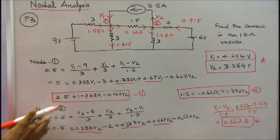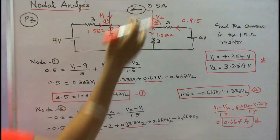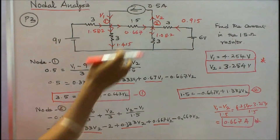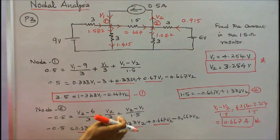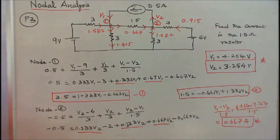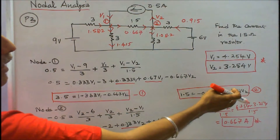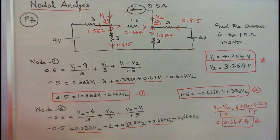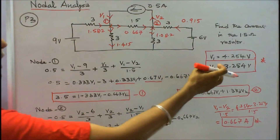At node 2, with V2 as higher potential, current leaving node 2 is 0.5: minus 0.5 equals (V2 minus 6) divided by 3, plus V2 by 3, plus (V2 minus V1) divided by 1.5. Simplifying gives: 1.5 equals minus 0.667 V1 plus 1.333 V2. Solving the two equations gives V1 equal to 4.254 volts and V2 equal to 3.254 volts.